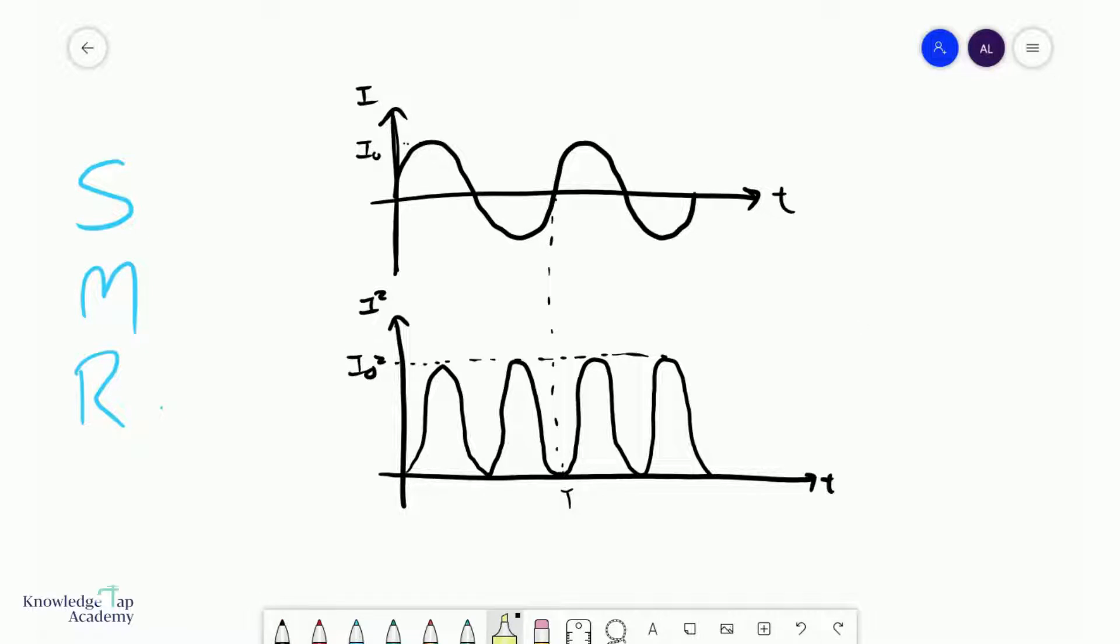So, the next step is to find the mean, which means we would need to get the area under these little things over here for one period and divide it by the period. Now, the problem is that to find the area under this curve, you would need to perform some sort of integration.